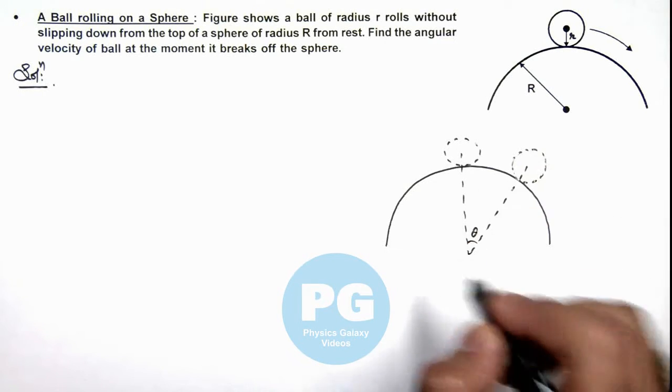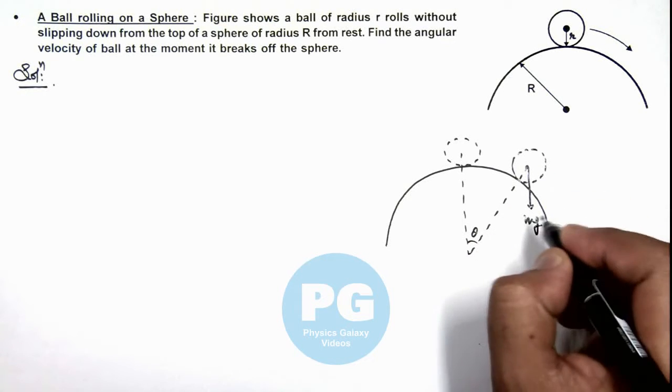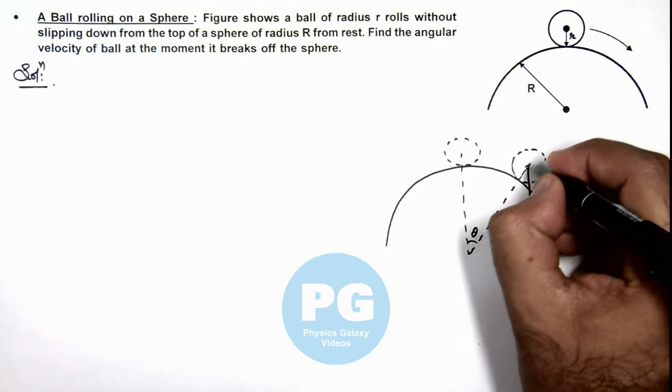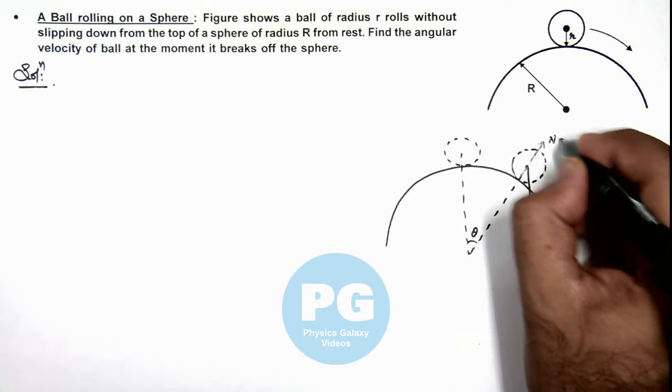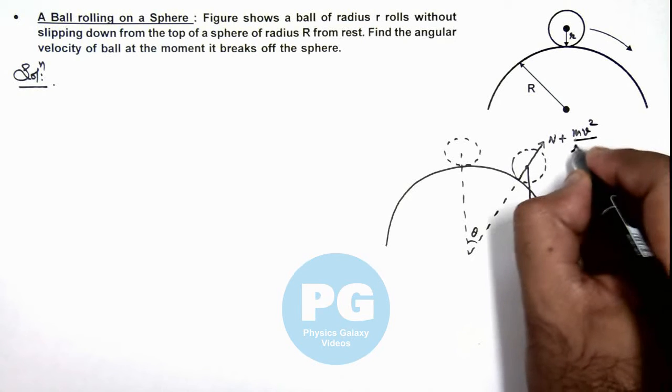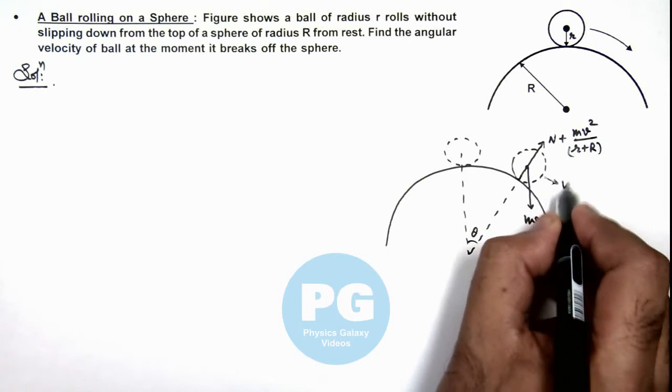At this position the ball will be experiencing its weight mg. In the outward direction it'll be experiencing a normal reaction plus the centrifugal force which is mv²/(r+R) if the ball is moving at a speed v at this position.